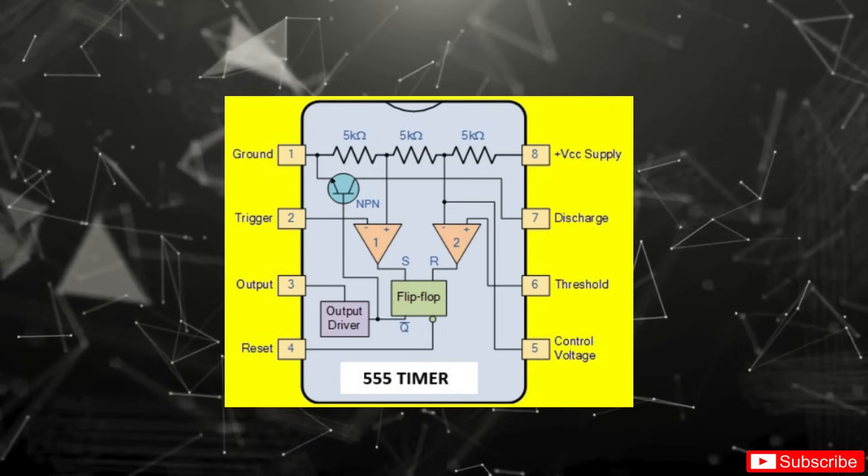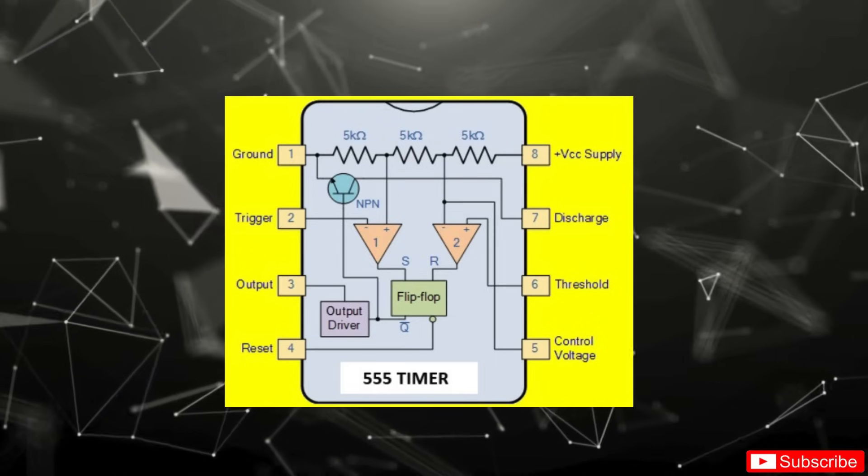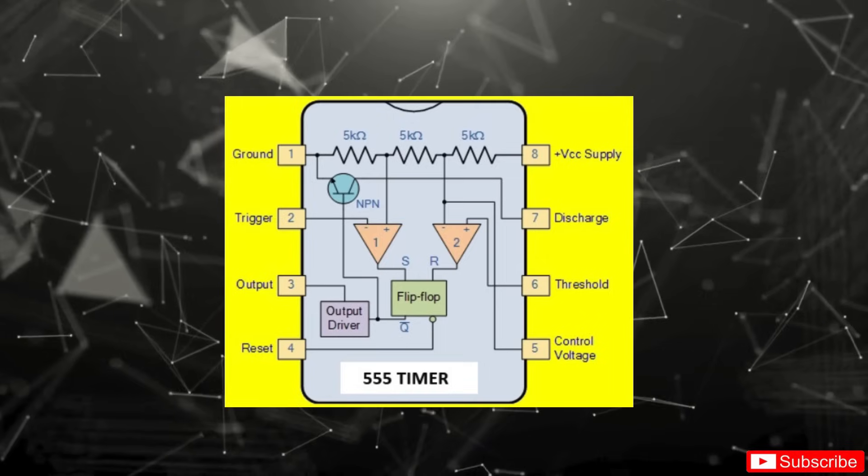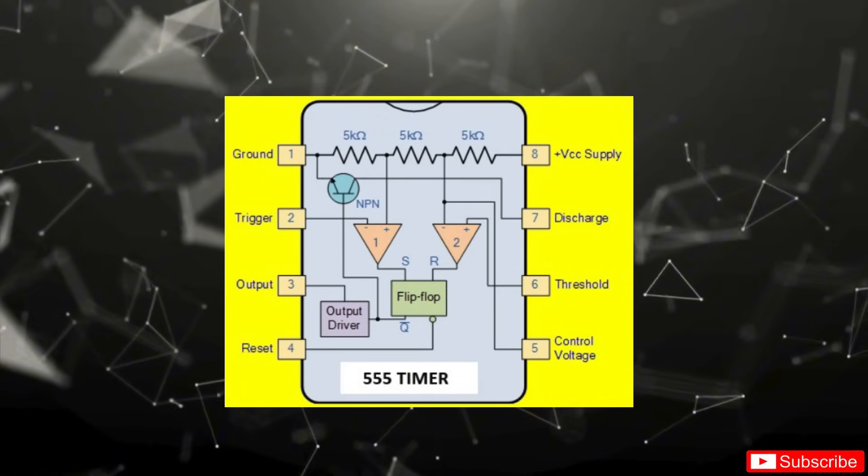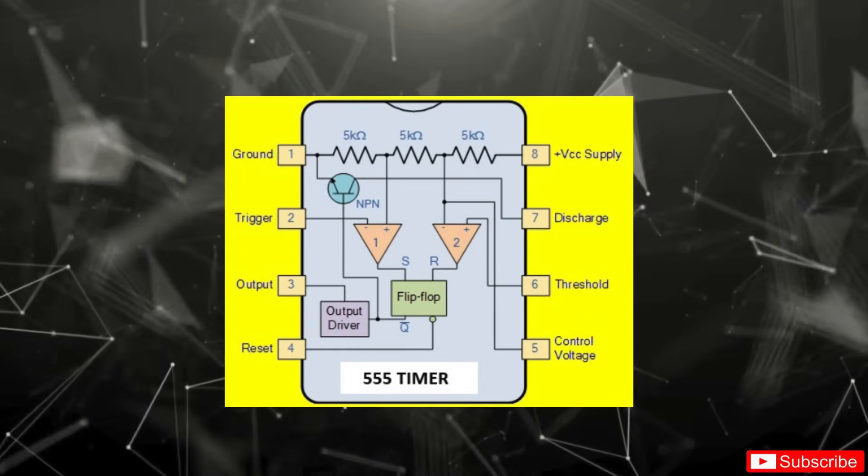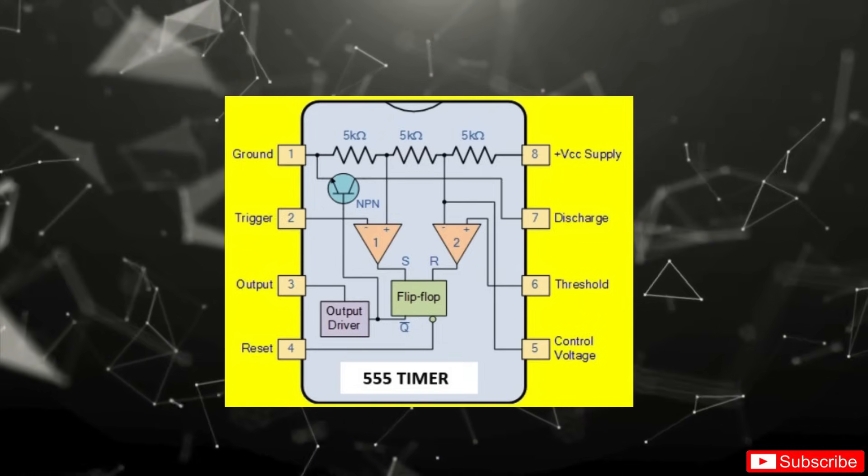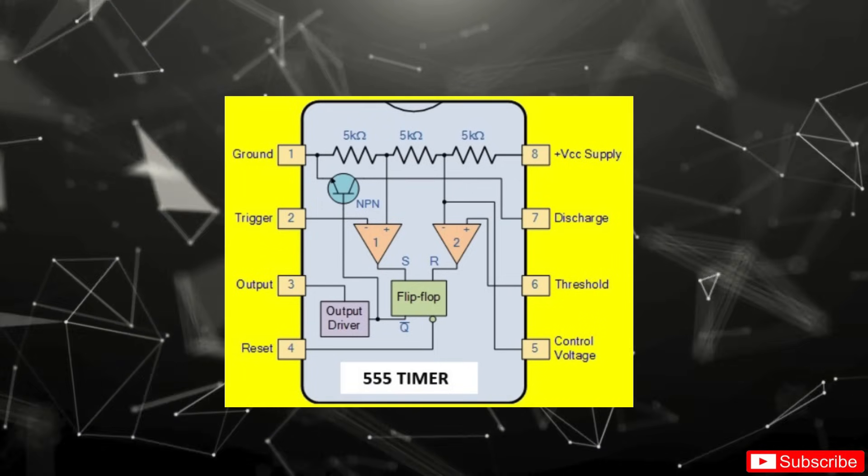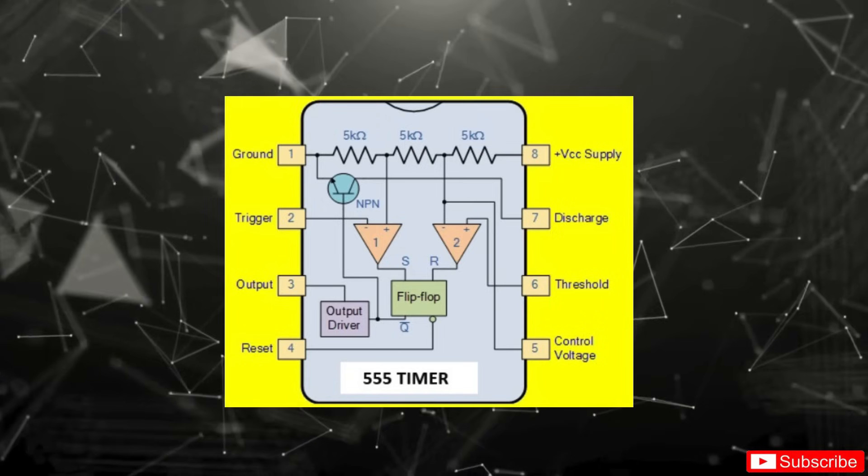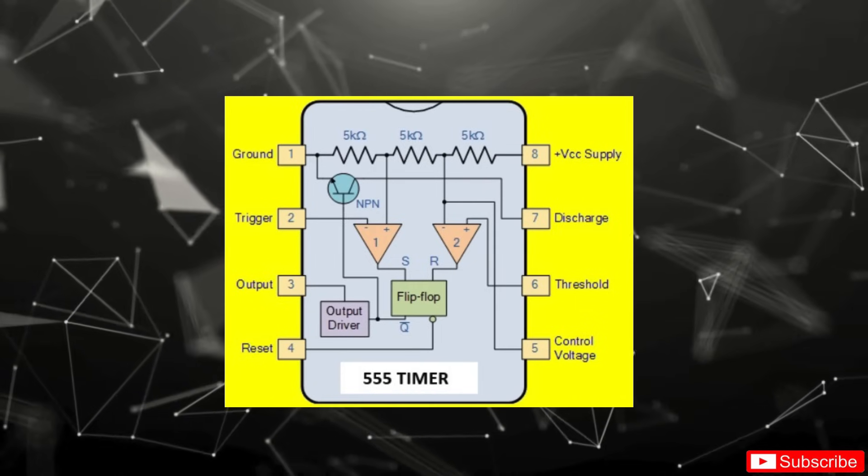Here's what each pin does on the 555 timer. Pin 1 is ground, your circuit's reference point. Pins 2 and 6 are the trigger and threshold. They monitor the capacitor voltage. When it drops below one-third VCC, the output goes high. When it rises above two-thirds VCC, the output goes low. Pin 3 is the output. This delivers the pulse train that clocks the CD4017. Pin 4 is the reset pin. Keep this high to let the timer run. Pulling it low stops all pulses. Pin 5 is the control voltage input. We usually connect a 10 nF capacitor to ground here to filter noise and improve stability. Pin 7 is the discharge pin. This acts like a switch to dump the capacitor during the low interval. Pin 8 is VCC. This is your supply voltage, typically 5 volts in our design.